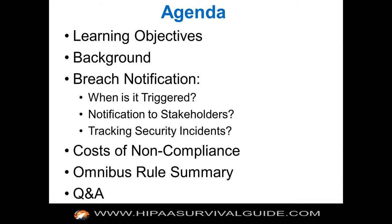The agenda today: we're going to cover learning objectives and background information. With respect to breach notification, we'll cover when it is triggered, the kind of notification to stakeholders that needs to be provided, tracking security incidents — which is really breach notification 101 — the cost of non-compliance, and an omnibus rule summary. The omnibus rule has caused a lot of confusion and myth-making, so we want to clarify what it was and what it wasn't. Then we'll have formal Q&A at the end.